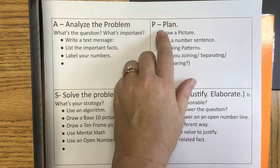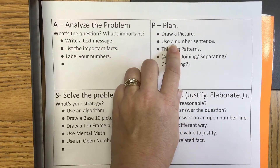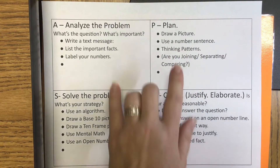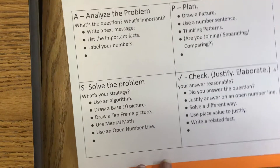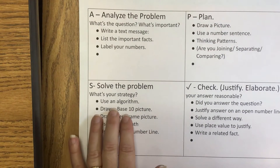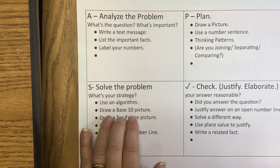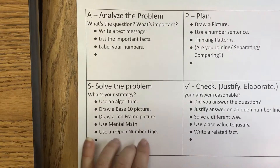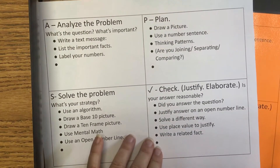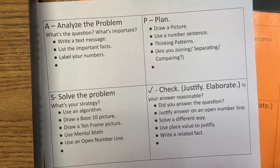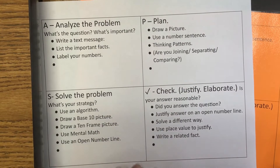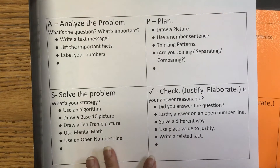When we do our plan, we're going to draw a picture, use a number sentence, and use our thinking patterns to talk about whether we're joining, separating, or comparing. We'll talk about thinking patterns in a minute. When we get to a strategy, this could be where you use an algorithm, draw another picture, do a base 10 picture or a 10 frame, use mental math, or use a number line. Then we check to see if your answer is reasonable — did you answer the question? Can you justify your answer? Can you solve it a different way? Can you use place value to justify or write the related fact?